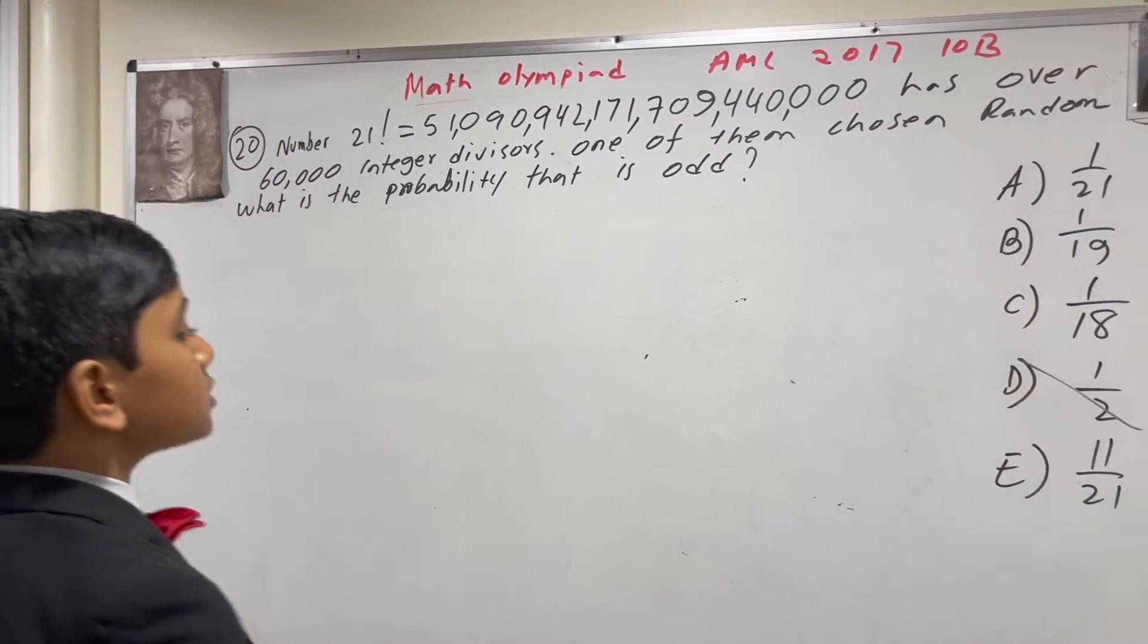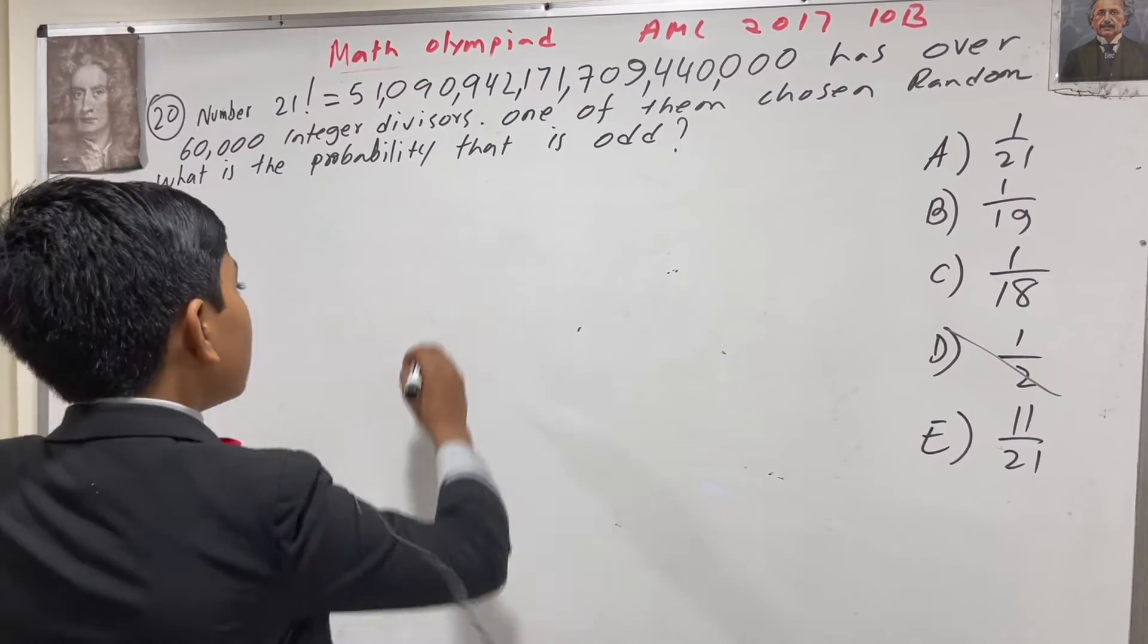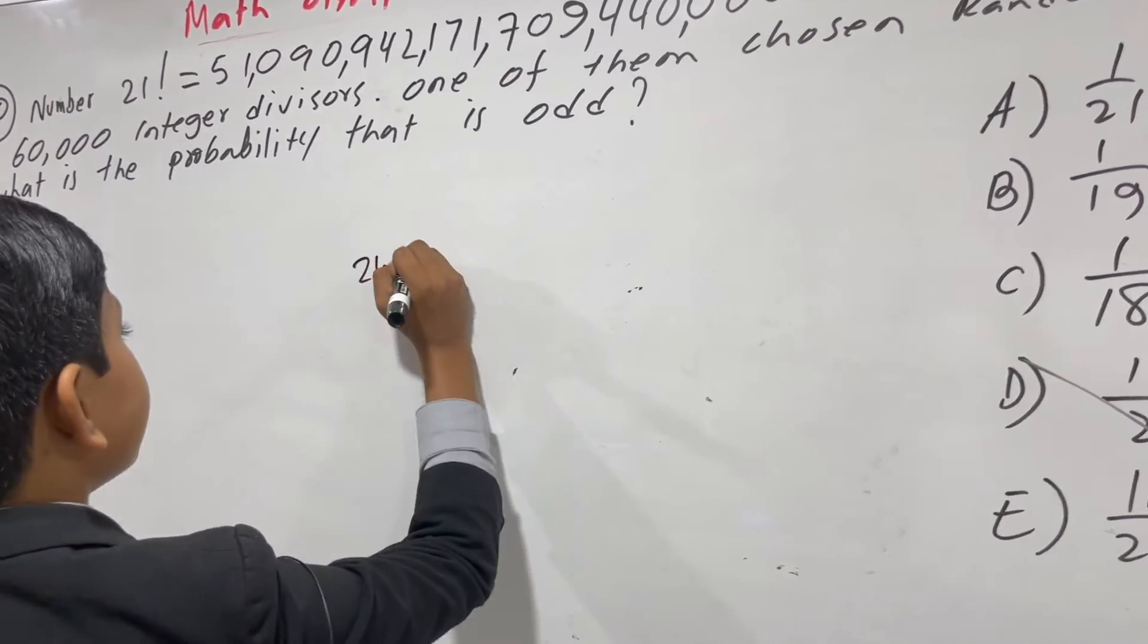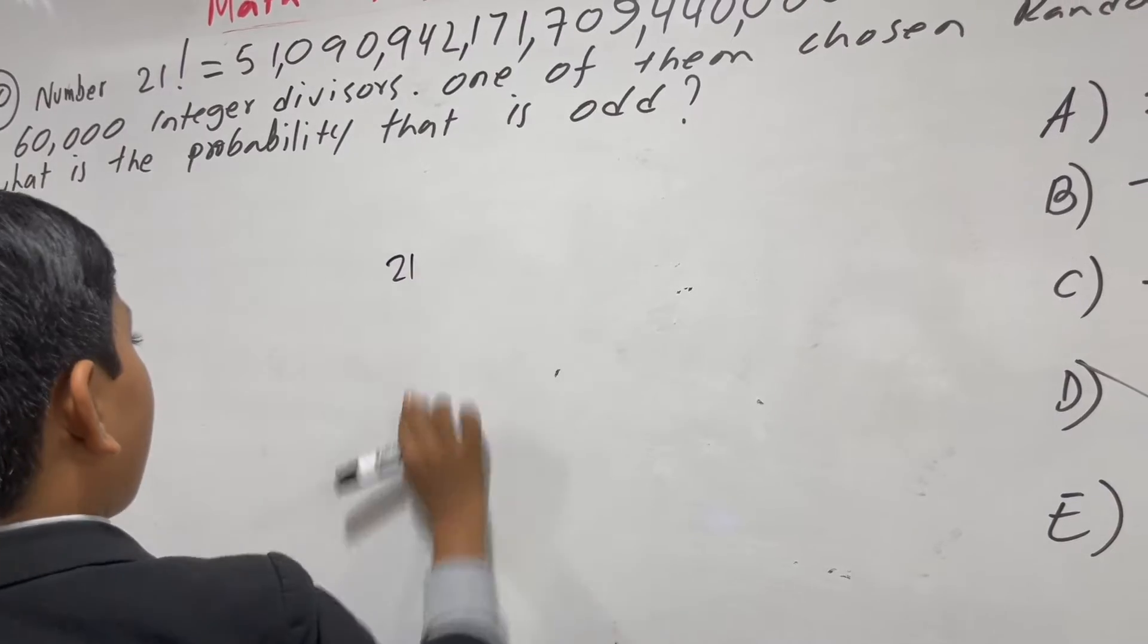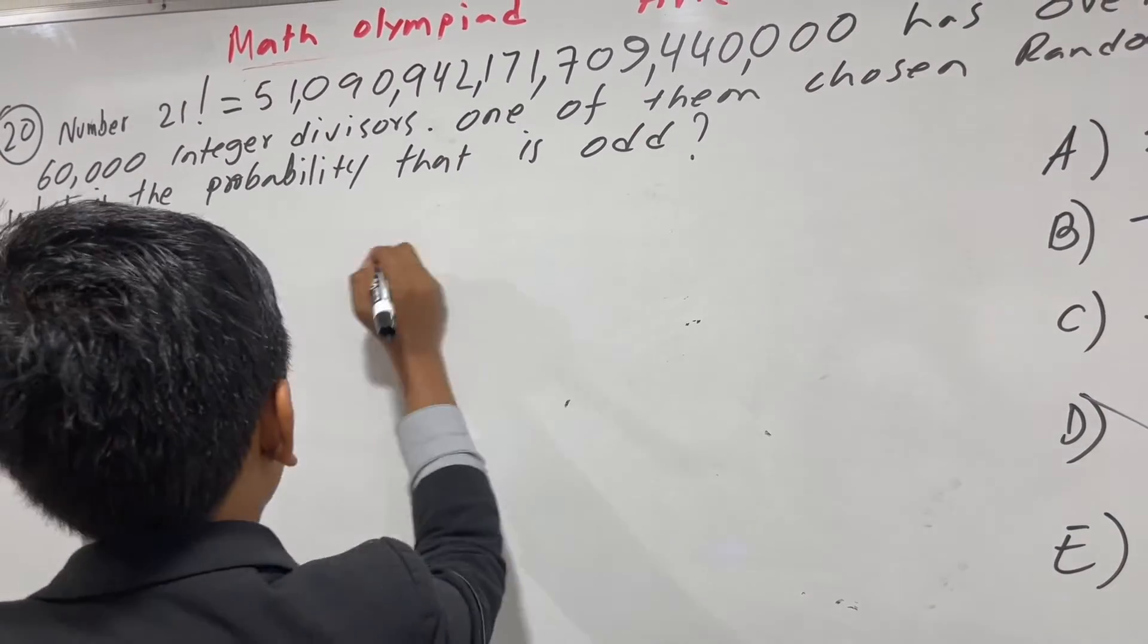Alright, so now let's get to it. How do we do this? Well, let's take the prime factorization of 21 factorial. It's a really large number, so let's split it up into its components.